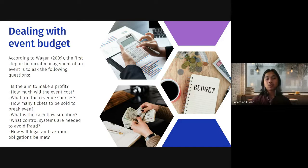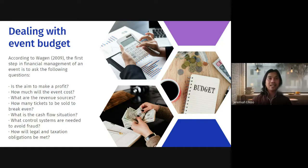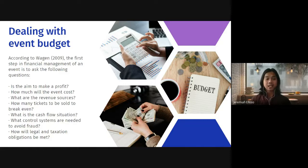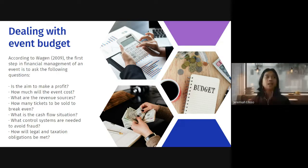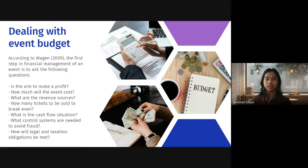How much will the event cost? With the event requirements laid out, find suppliers who can provide what is needed within the target budget — you don't want to go over budget. What are the revenue sources? How many tickets need to be sold to break even? What is the cash flow situation? Having an understanding of cash flow and financial situation is important for meeting the financial objective of the event. What control systems are needed to avoid fraud? Proper auditing should be in order to maintain a check and balance of your financial and accounting system. How will legal and taxation obligations be met?